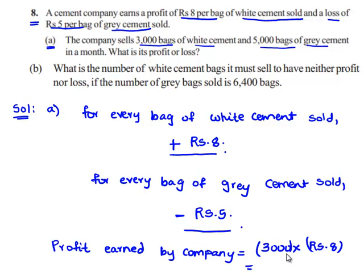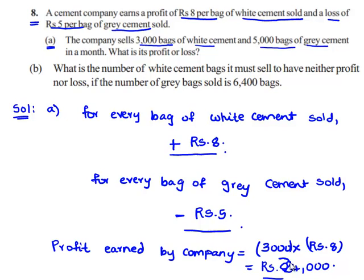3,000 multiplied by 8: 3 times 8 gives 24, and we are left with 3 zeros, that is equal to 24,000. Therefore, the profit earned by the company by selling 3,000 bags of white cement is plus Rs.24,000.